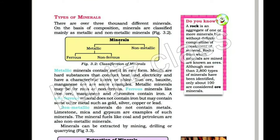There are over 3000 different minerals with a wide variety available. On the basis of composition, minerals are classified mainly as metallic and non-metallic minerals. So these minerals have two main compositional categories.